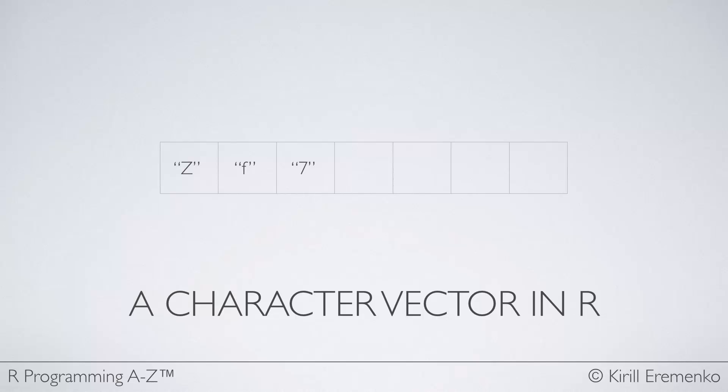Because remember that a vector can only have data elements of the same type. So even if you tried to put in a seven as a number into a character vector, R would automatically change it for you into a character. So because it can't change a letter into a number, but it can change a number into a character, your resulting vector would, of course, be of characters.